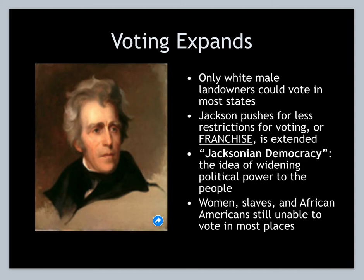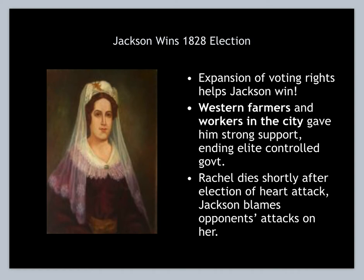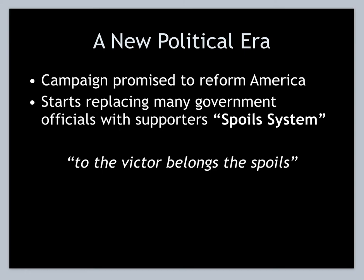Jacksonian Democracy is not meant for women, slaves, African Americans, or Native Americans. Jackson wins the election of 1828 pretty handily and gets more common man voting. Tragedy strikes — Jackson's wife dies shortly after the election. He ushers in a new political era of the common man, wanting to reform America and get rid of the wealthy elite running the country.